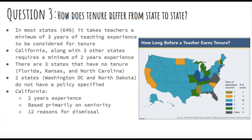California requires two years of teaching experience, and achieving tenure is based primarily on seniority. However, there are 12 reasons for dismissal. These include: immoral or unprofessional conduct, criminal syndicalism, dishonesty, unsatisfactory performance, evident unfitness for service, physical or mental condition unfitting the teacher to instruct or associate with children, persistent violation or refusal to obey school laws, conviction of a felony or any crime involving moral turpitude, advocating or teaching communism, advocating overthrow of the government, knowing membership in a communist party, and alcoholism or drug abuse that makes the employee unfit to instruct or associate with students.